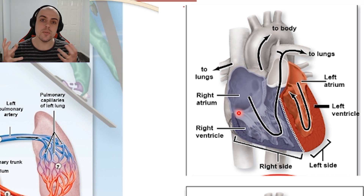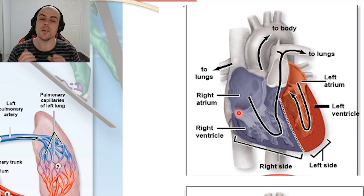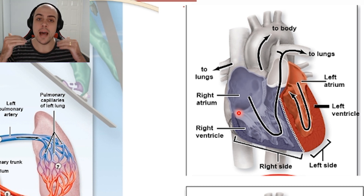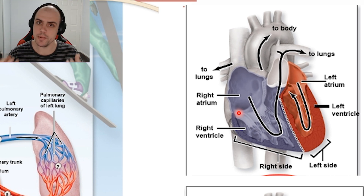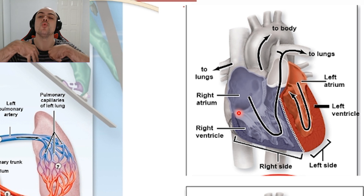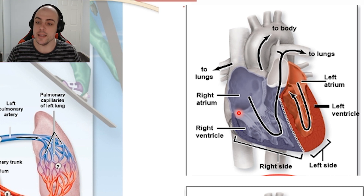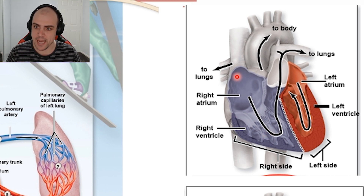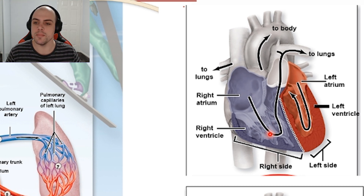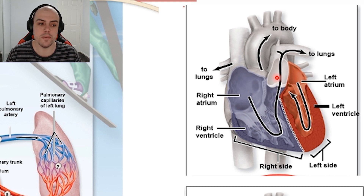The ventricles are going to constrict, and what that is going to do is cause our AV valve — our tricuspid valve — to snap closed. This is to prevent the blood from moving from the ventricle back up to the atrium. This is then going to cause the blood to move up and through our pulmonary semilunar valve into our pulmonary trunk.